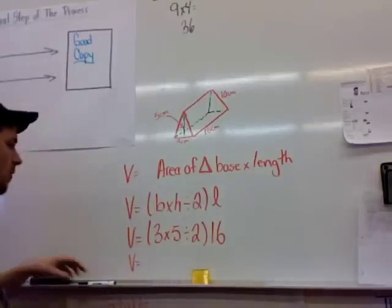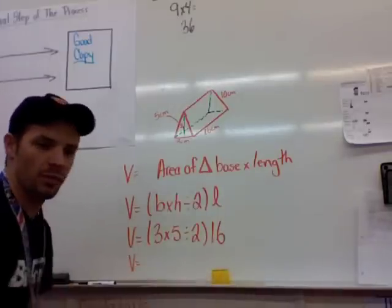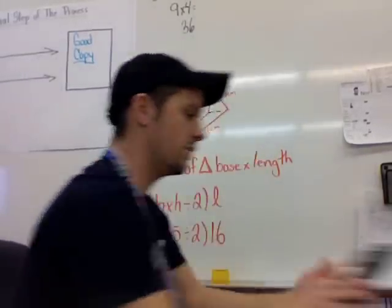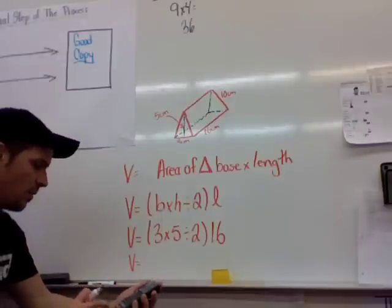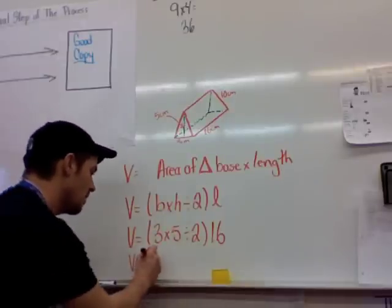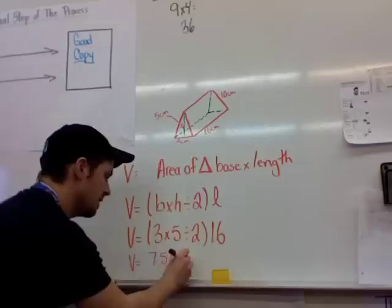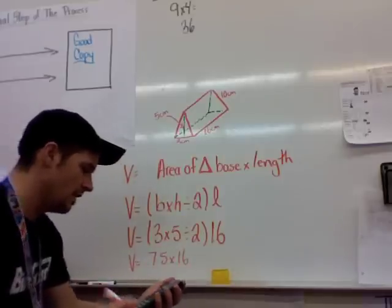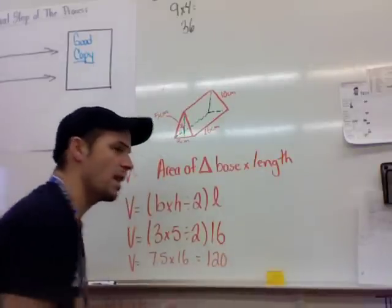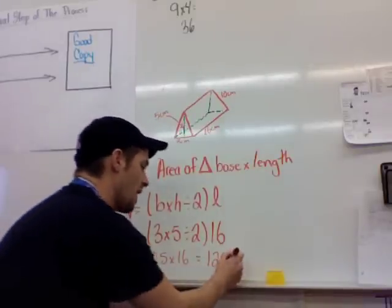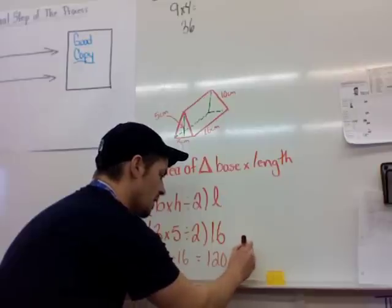And as you work your way through that, you're going to find that the actual formula works out to be as follows. We'll get the handy-dandy calculator. So we go 3 times 5 divided by 2. We always start with the brackets. We go 7.5 times 16, and that ends up being 120. Now we're not done. We have to make sure we mark this with units, and that's going to be centimeters cubed.